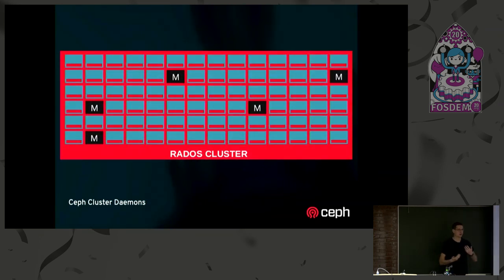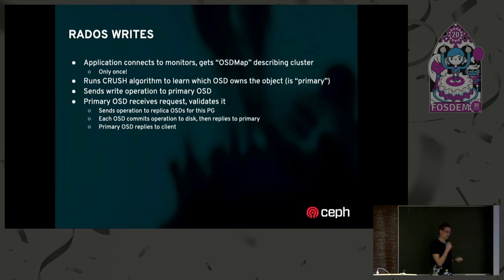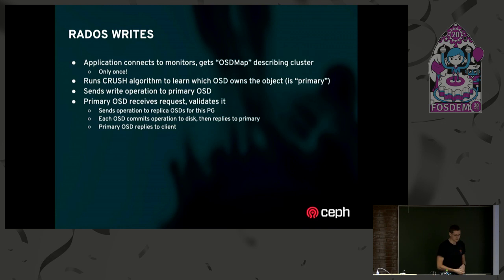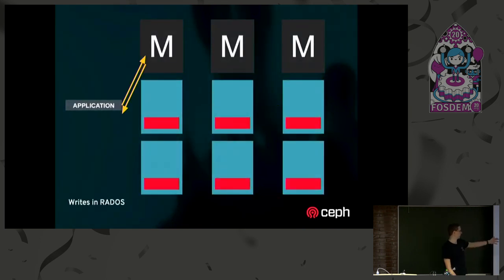A Rados cluster generally consists of three or five monitors and a whole bunch of OSDs. When we serve writes out of Rados, an application connects to the cluster, talks to the monitors, and gets their OSD map. They run our magic CRUSH algorithm, which determines which OSD is the primary, responsible for processing operations on a given object. The primary runs validation, does preprocessing, sends replication IO to the other replicas, and once the replicas reply, returns to the client. Visually, it's one round trip to the monitor, and then a whole bunch of writes.